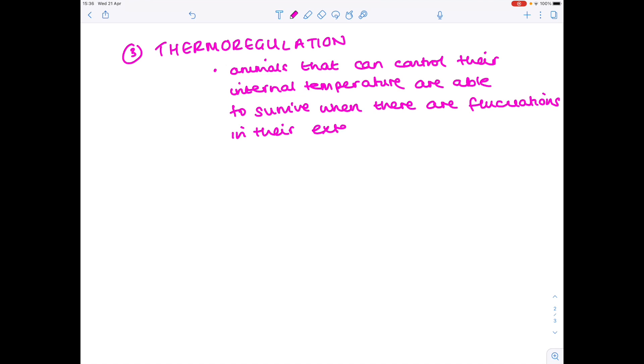If we look at the importance of homeostasis now concerning temperature control, so thermoregulation. So animals that can control their internal temperature are more likely to survive if and when there are fluctuations to their external environment. And that therefore makes us understand how mammals are able to survive.